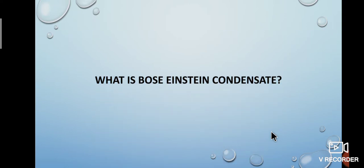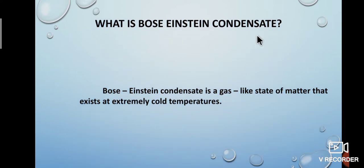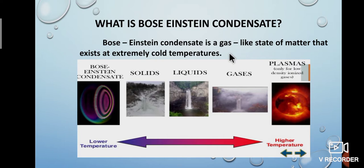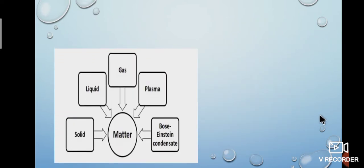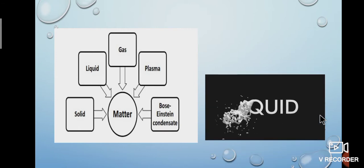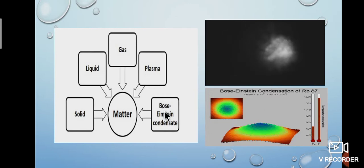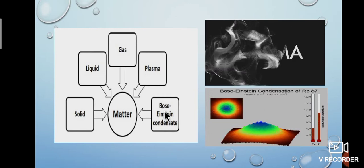Next, what is Bose-Einstein condensate? Bose-Einstein condensate is a gas-like state of matter that exists at extremely cold temperatures. At low temperature, we can isolate the Bose-Einstein condensate state. See the picture — there are five states of matter shown from Bose-Einstein condensate upward with increasing temperature. We confirmed that the states of matter are five — solid, liquid, gas, plasma and Bose-Einstein condensate — which are isolated by temperature.